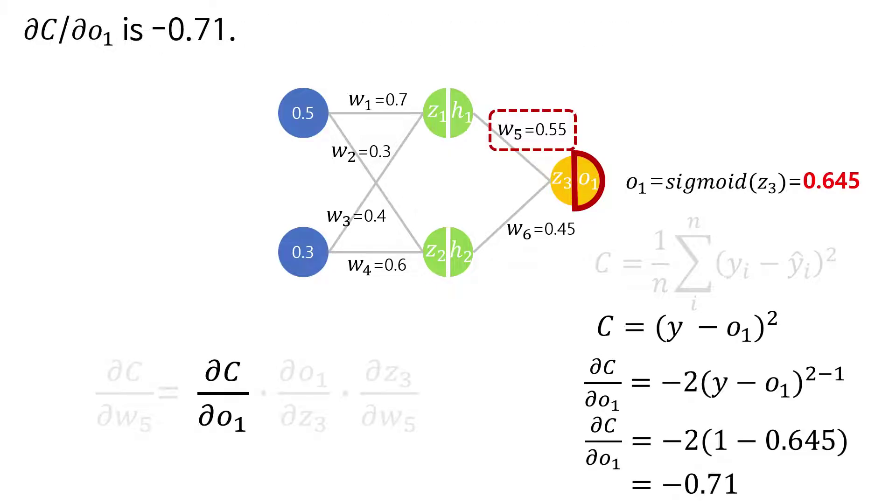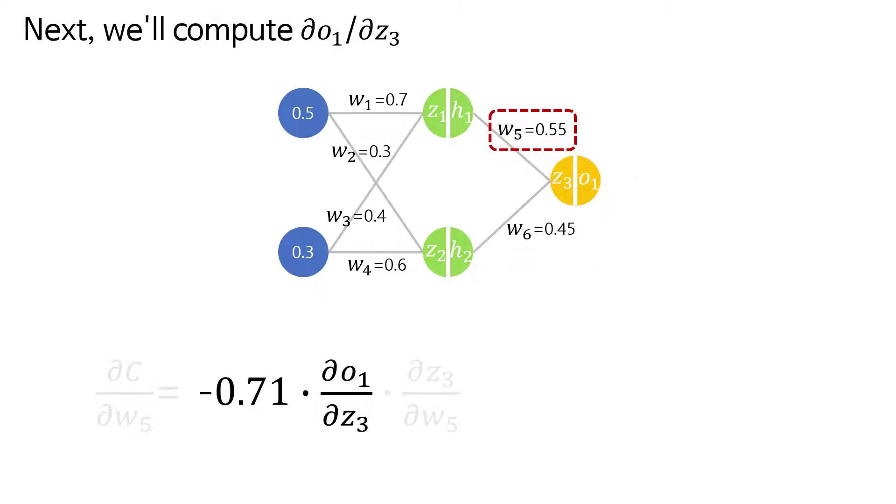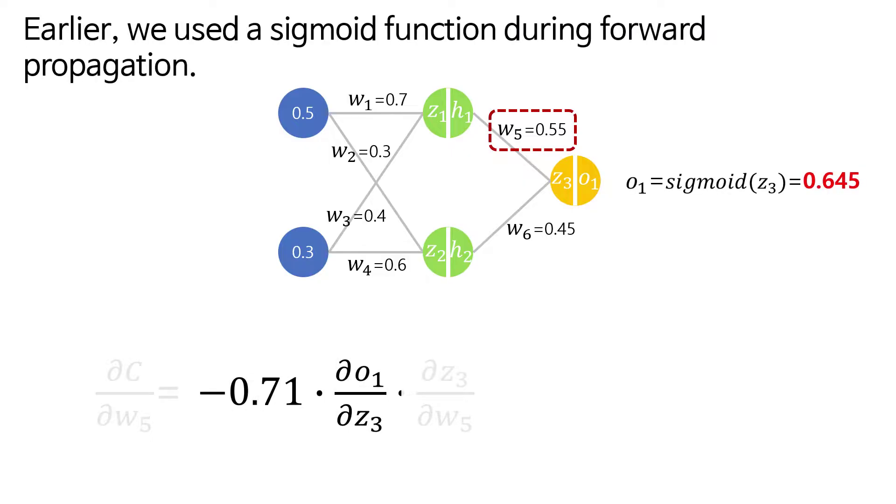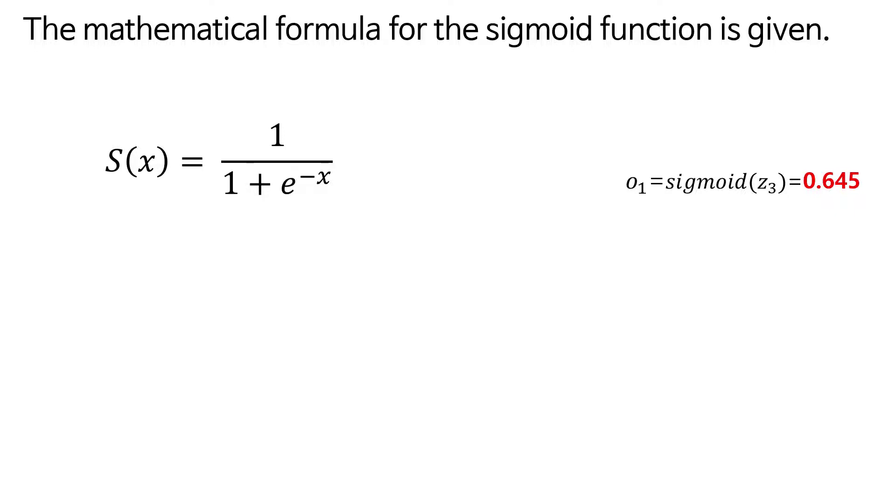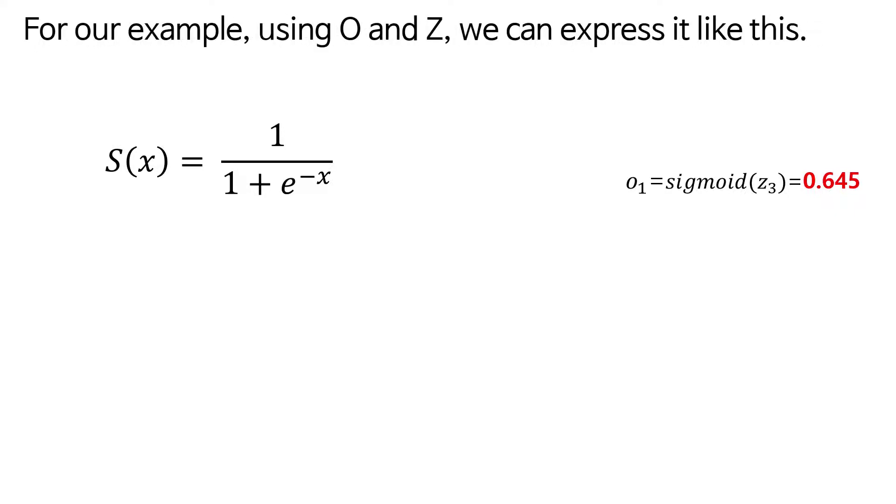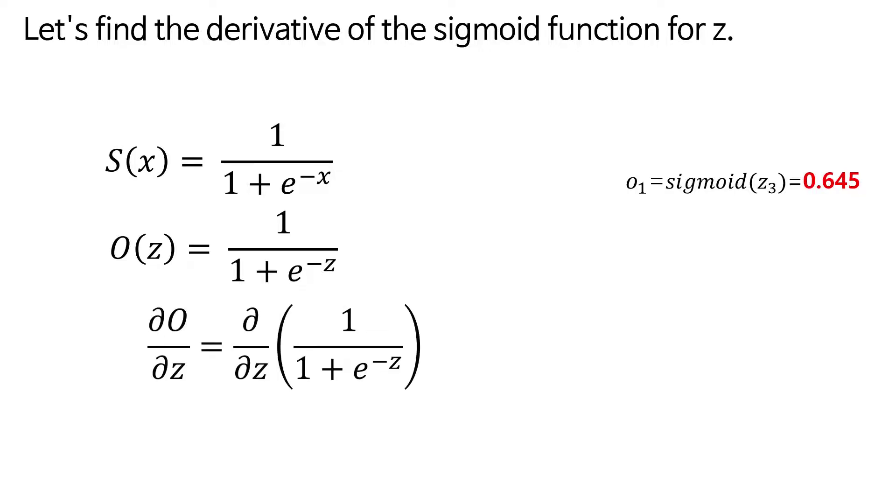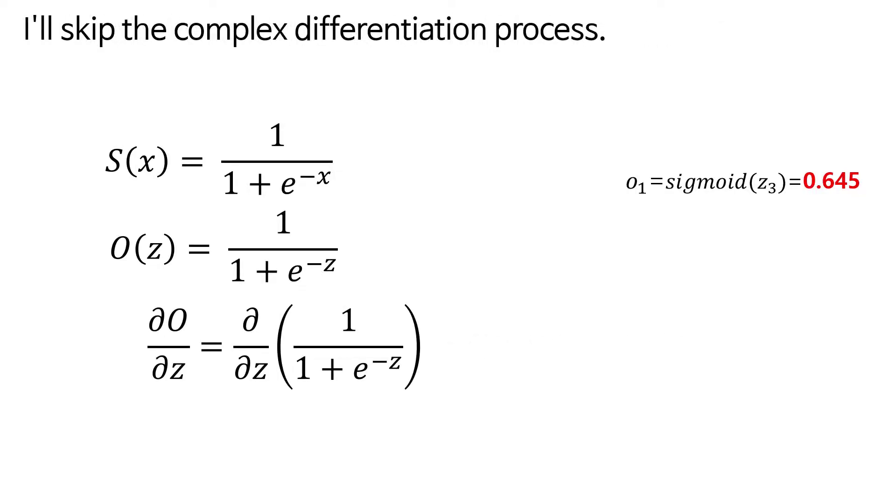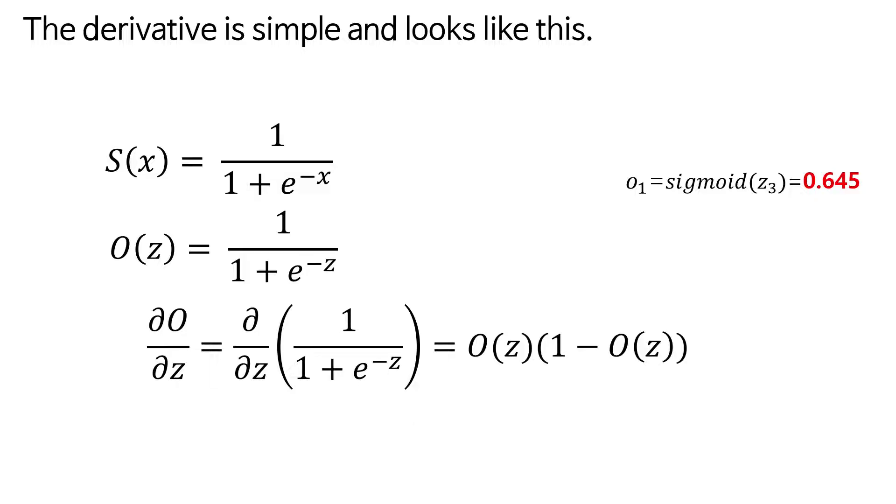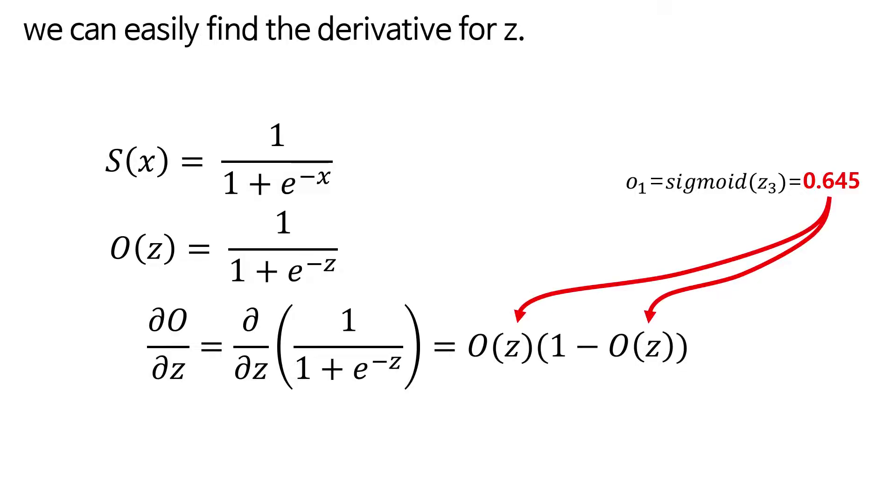Next we'll compute ∂o1/∂z3. Earlier we used a sigmoid function during forward propagation. The mathematical formula for the sigmoid function is given. For our example, using o and z, we can express it like this. By changing the variables we can rewrite it. Let's find the derivative of the sigmoid function for z. I'll skip the complex differentiation process. The derivative is simple and looks like this.